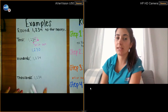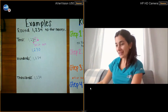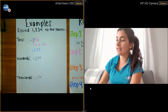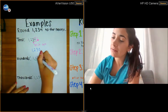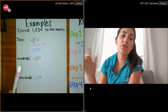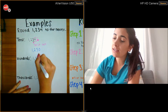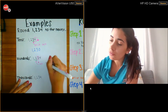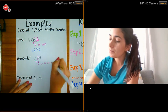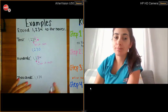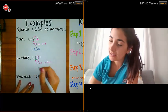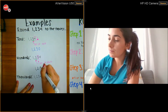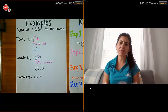Rounding 1,234 to the nearest hundreds place: underline the hundreds place, which is 2. Box the digit to its right, which is 3. Ask yourself: is 3 four or less? Yes — so four or less, let it rest. When writing our new number, the 1 stays the same, the 2 stays the same since we're letting it rest, and everything else turns into zeros — giving us 1,200.